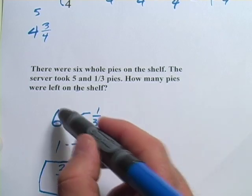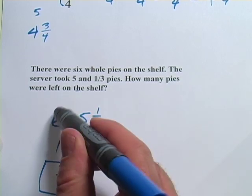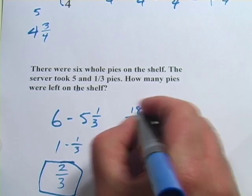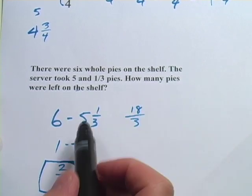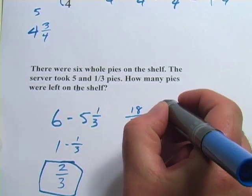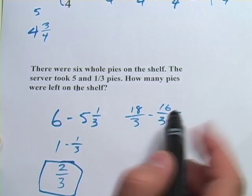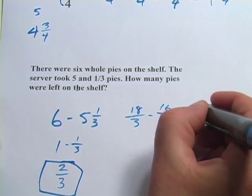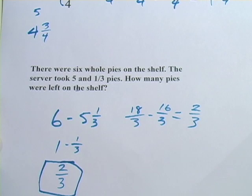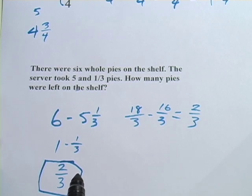If you want to do it the long way, convert everything to thirds. 6 times 3 is 18 thirds. 5 times 3 is 15, plus 1 is 16, so minus 16 thirds. 18 minus 16 is 2 thirds — same answer. So that's a little bit about subtracting fractions from whole numbers.